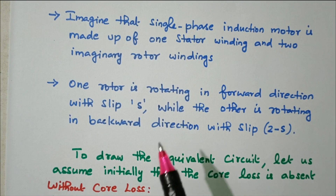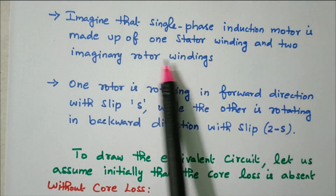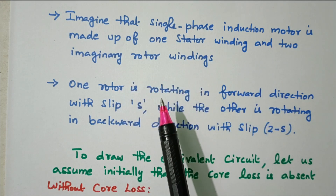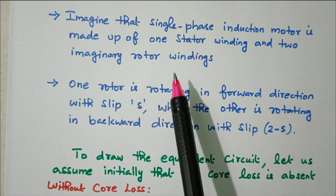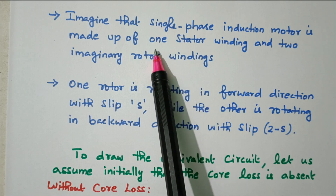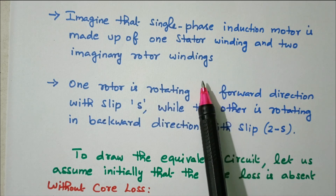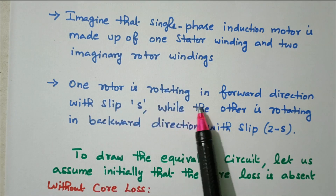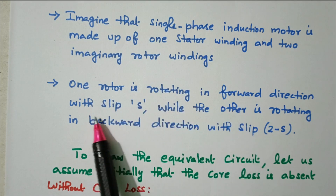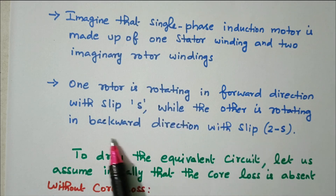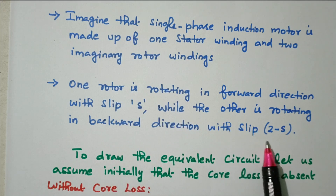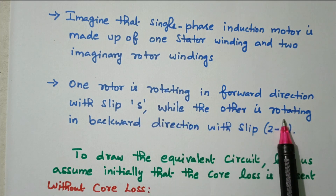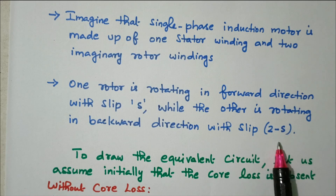To form the equivalent circuit, we imagine that the single phase induction motor is made up of one stator winding and two imaginary rotor windings. One rotor is rotating in the forward direction with a slip of s, while the other is rotating in the backward direction with a slip of 2 minus s.